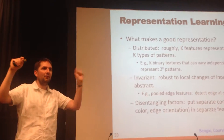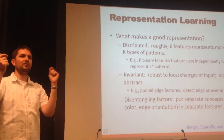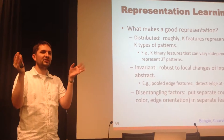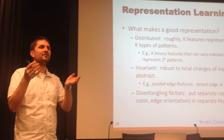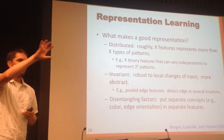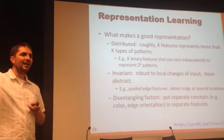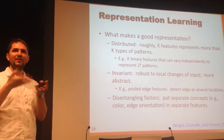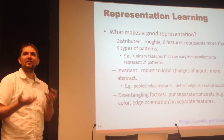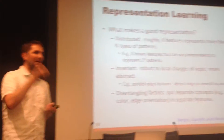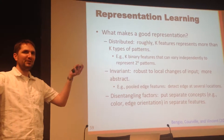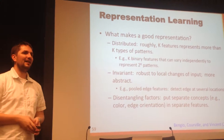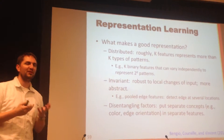I want to be able to use those neurons to represent more than just K patterns. If I only can recognize K mutually exclusive patterns, then I can't really represent much of the world. If I have to have a million neurons to represent a million different things, life is going to be pretty rough.